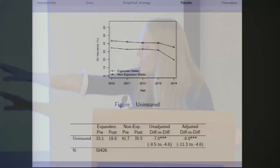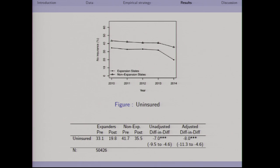Looking at the table, the percent uninsured among expanding states pre- and post-ACA versus non-expansion states: both expanding and non-expanding states saw an increase in insurance coverage — probably through state exchanges or increased take-up among those already eligible. But the difference is much larger in the expansion states — about a 7 to 8 percentage point larger gain in coverage in the states that expanded relative to those that didn't.